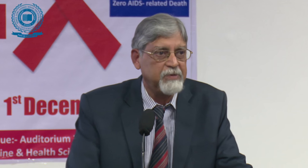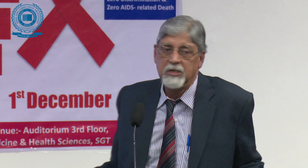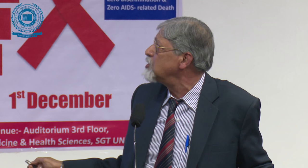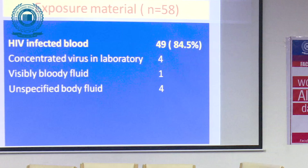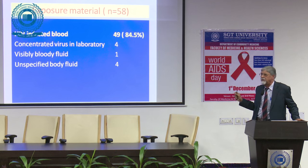Breaking down these 58 cases: they are mostly confined to nurses and lab technicians, who together comprise around 80% of cases. Physicians contribute about 10.3%. In terms of route of exposure, percutaneous puncture or cut accounts for 84.5%, followed by mucocutaneous exposure. In terms of exposure material, HIV-infected blood accounts for around 85%, with concentrated virus in the lab and other body fluids comprising fewer cases.